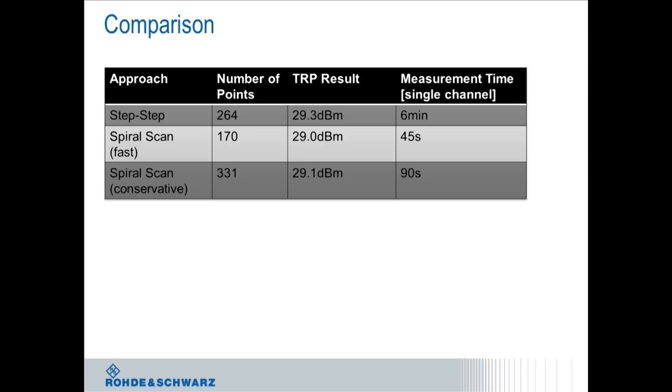So at 18 minutes, that's hurting people. That takes a long time, especially because you have a number of different bands and a number of different technologies. So from a measurement time perspective, still a lot less than TIS, but it adds up. So this is where we were really trying to cut down the measurement time with the spiral scan approach. And as you can see here in this table, it did.